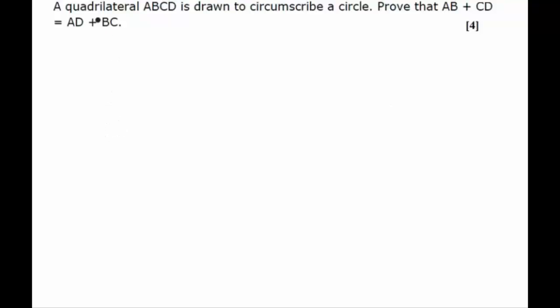Hello students, we have been given a quadrilateral ABCD which circumscribes a circle, and we have to prove that AB plus CD is equal to AD plus BC. That is, the sum of the opposite sides are equal.